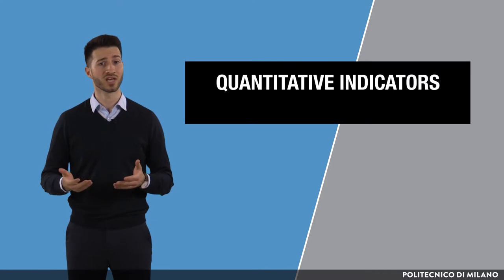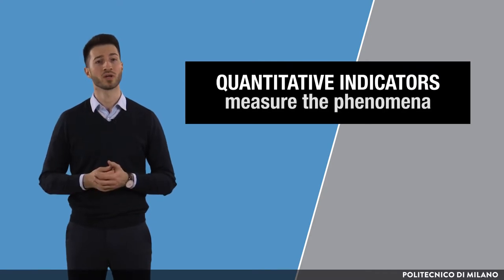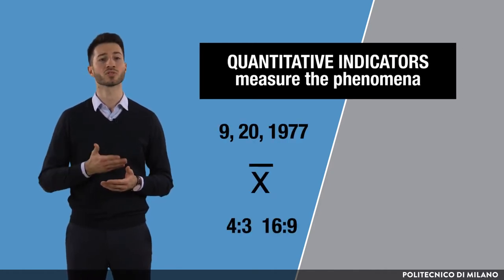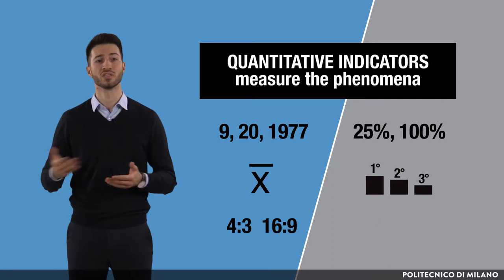Quantitative indicators, as the name suggests, are used to measure the phenomena that can be easily counted. They can take different forms: numbers, averages, ratios, percentages, rates, or indices.